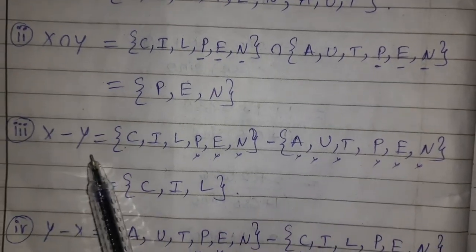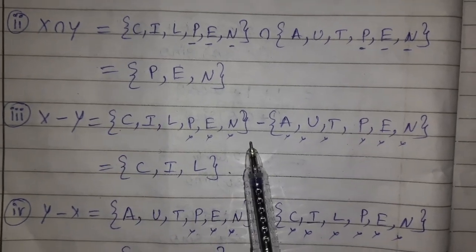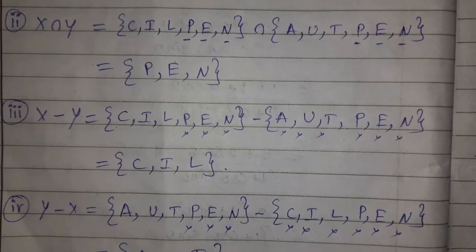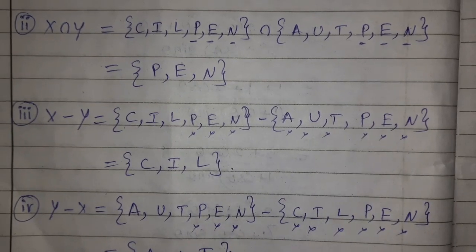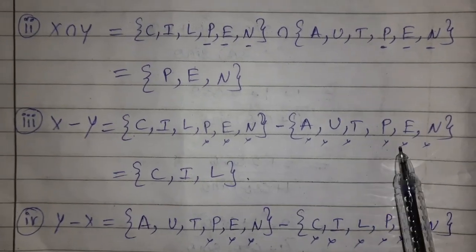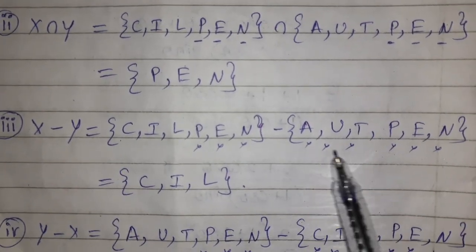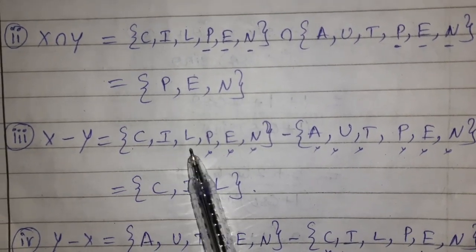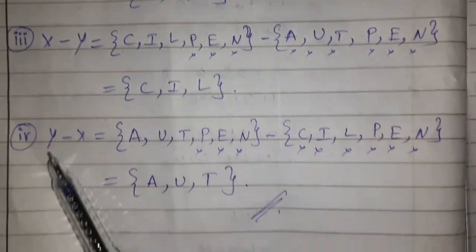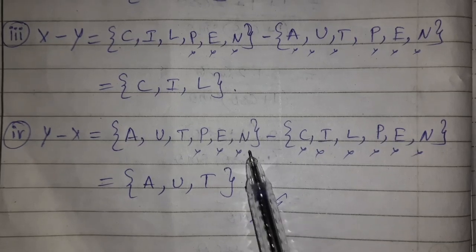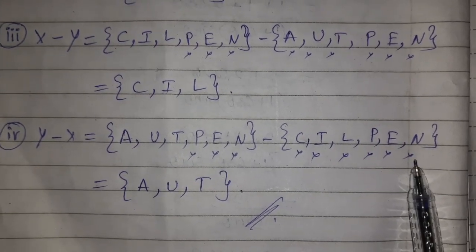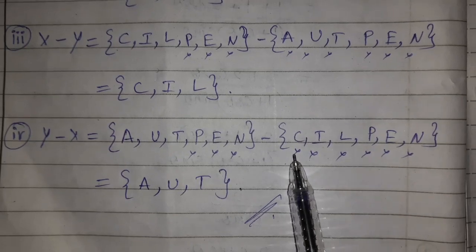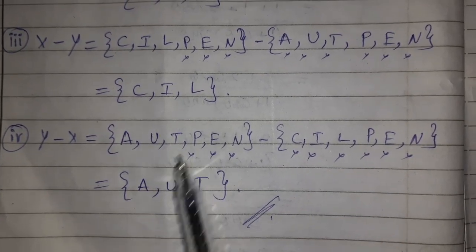X − Y means elements of X not in Y: eliminate P, E, N (repeated in both) and all Y elements. Left over is {C, I, L}. Y − X means elements of Y not in X: eliminate P, E, N and all X elements. Left over is {A, U, T}.